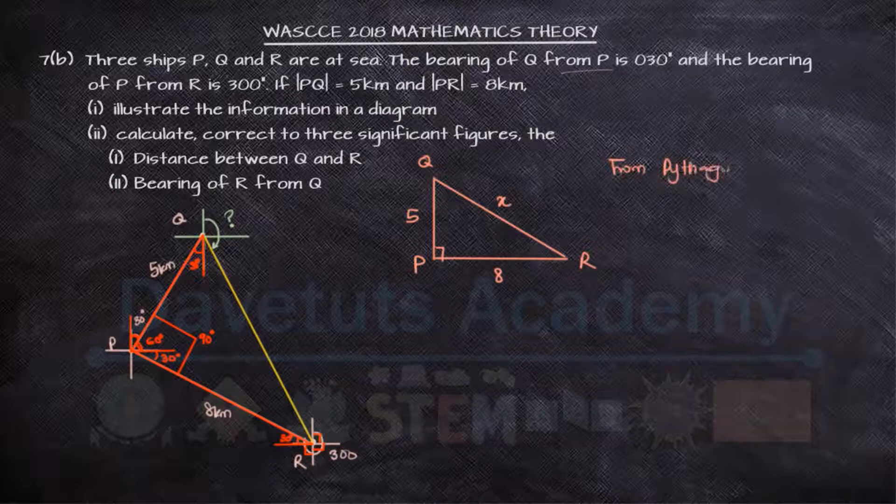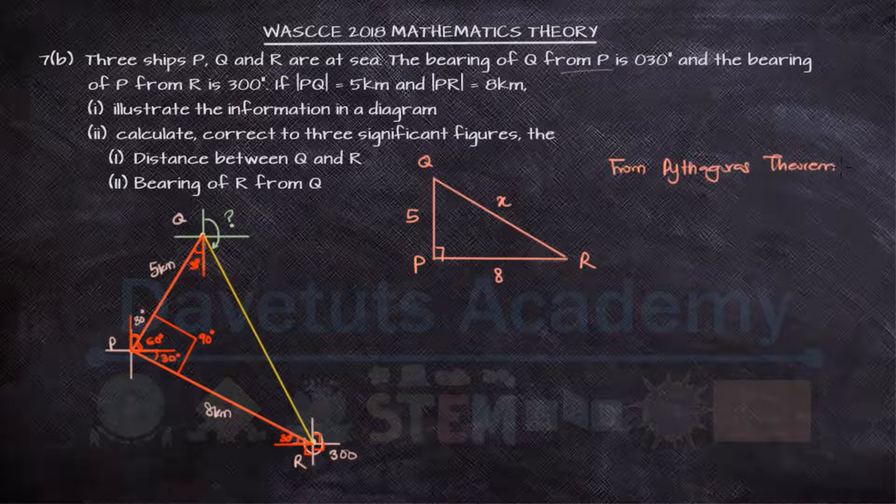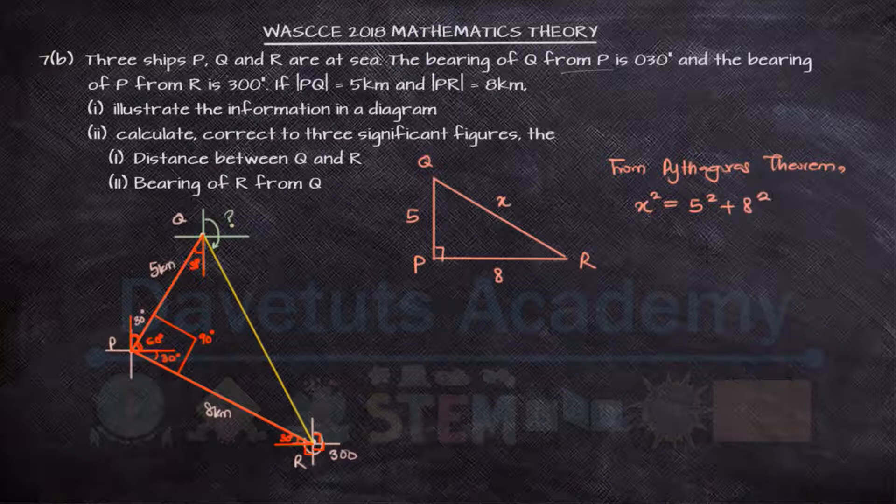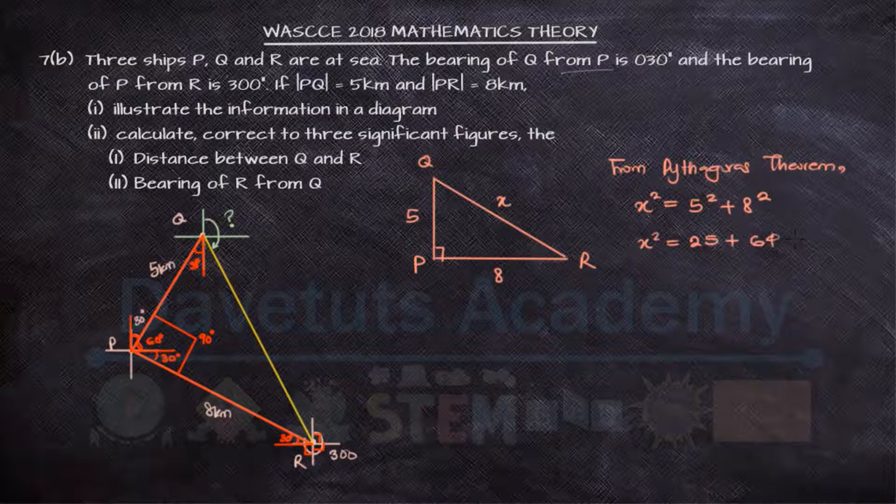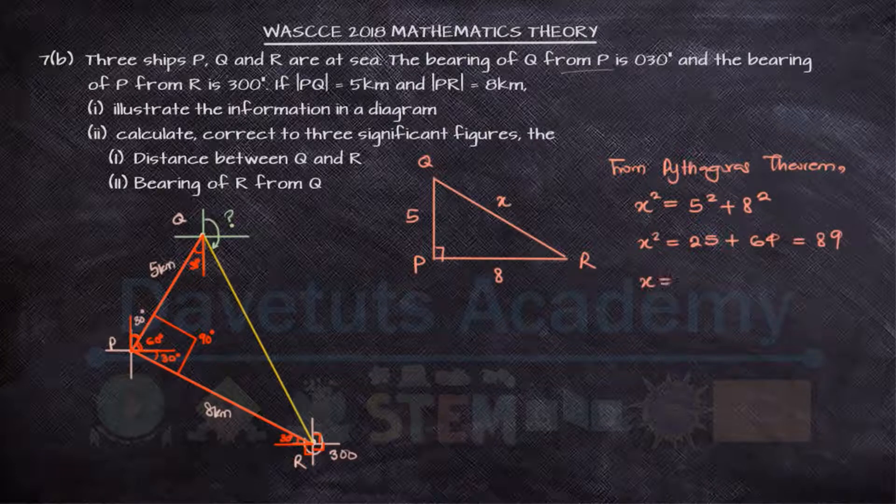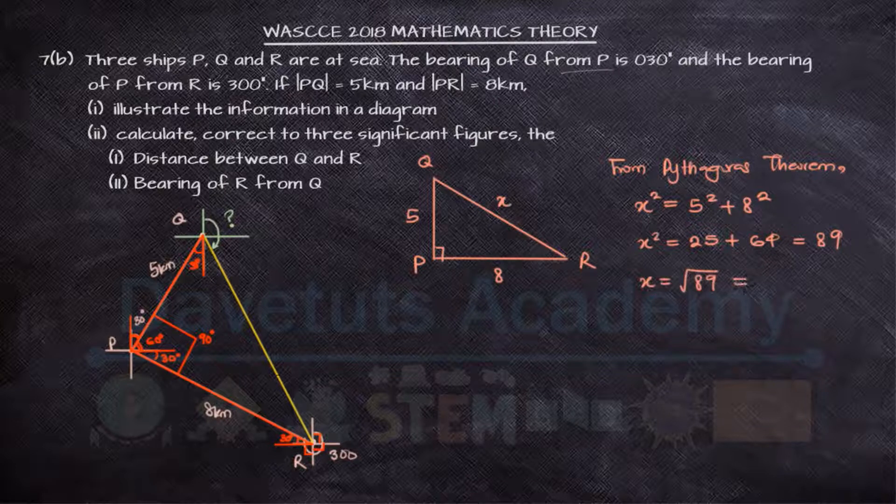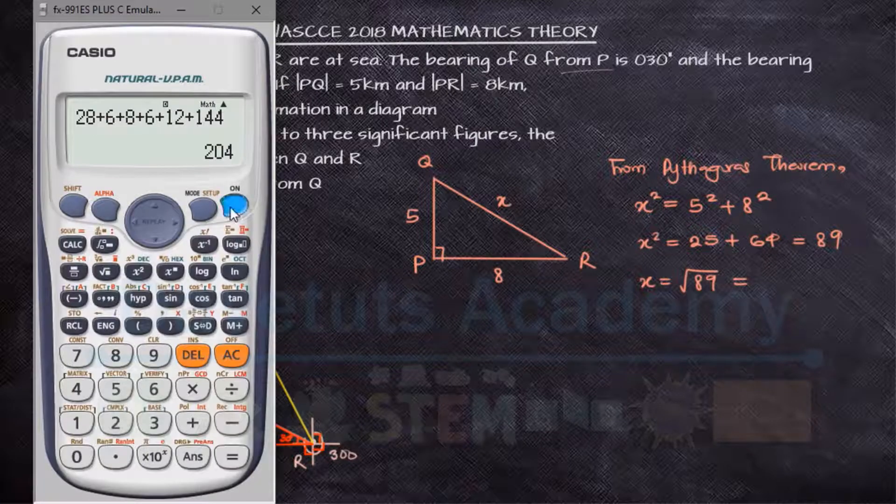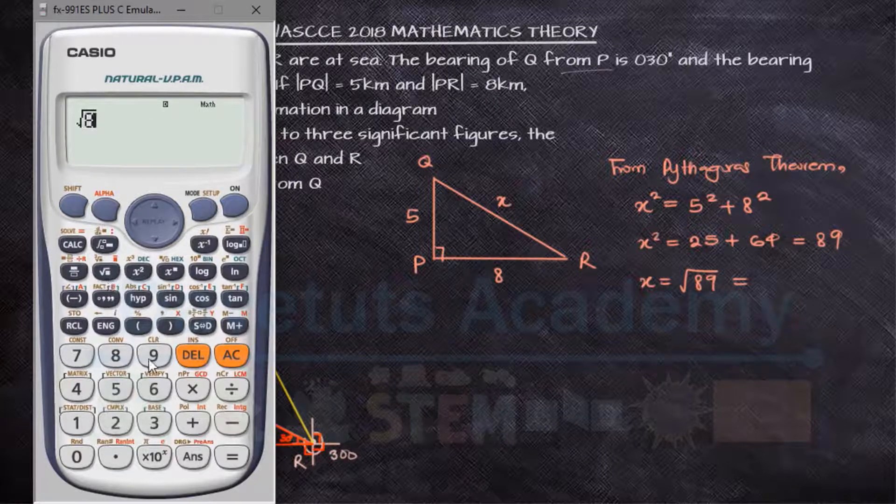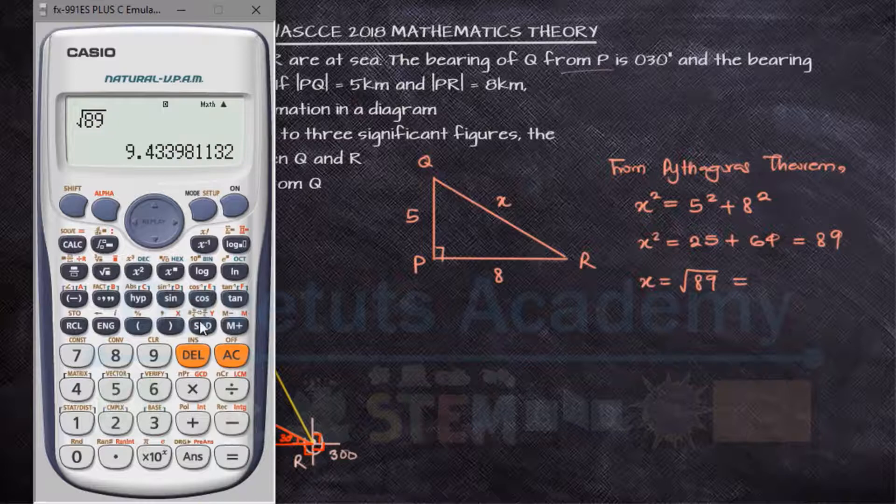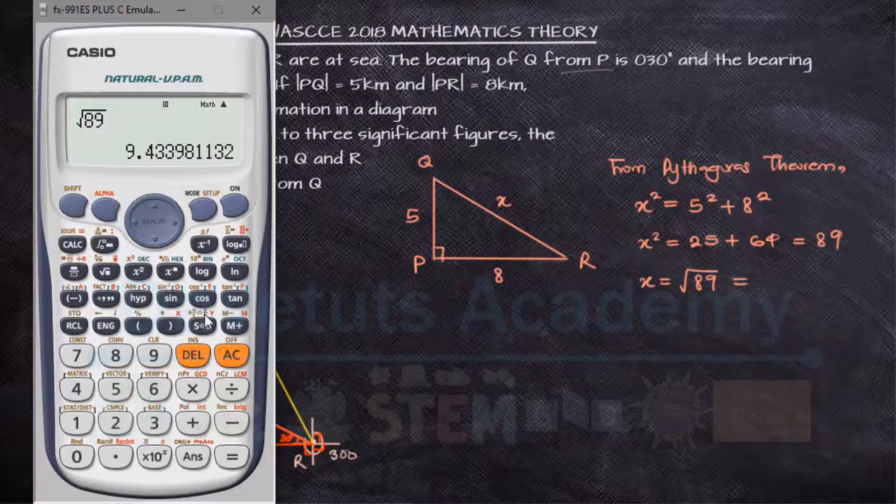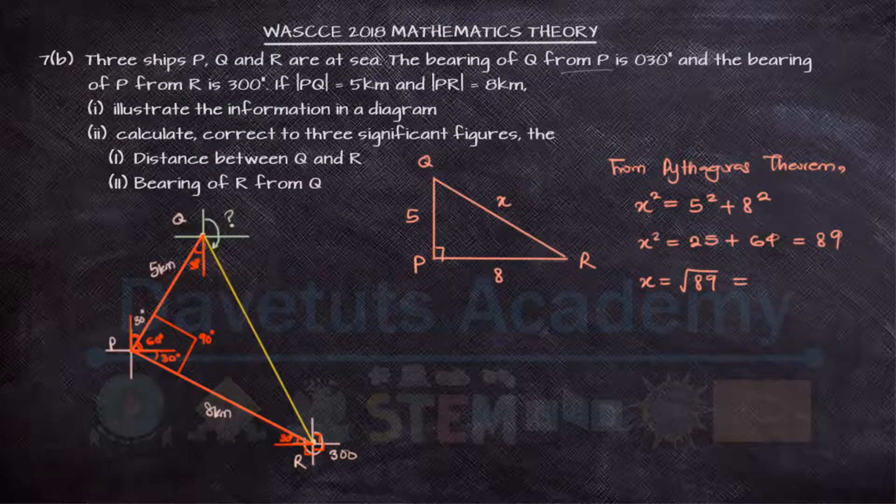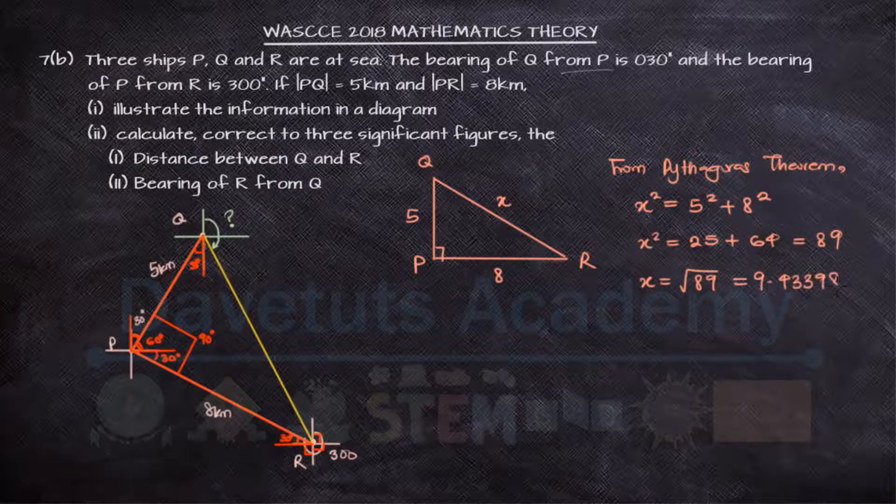For a right angle triangle to find QR, which is denoted as x, we can use Pythagoras theorem. Pythagoras theorem gives us that the hypotenuse squared is equal to the square of the adjacent plus the square of the opposite. So x squared will be 25 plus 64, which equals 89, and x will be the square root of 89, which is 9.43398 kilometers.